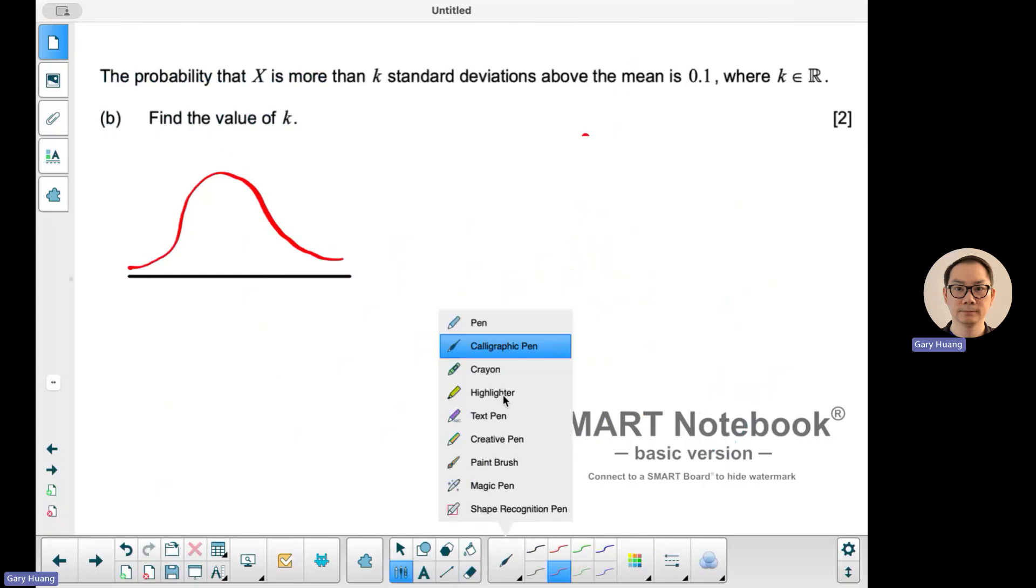So you have to see we understand that the probability is 0.1. And it's above the mean. So we're talking about here 0.1.